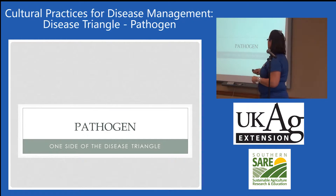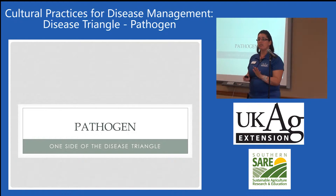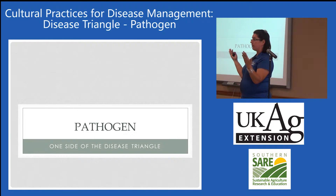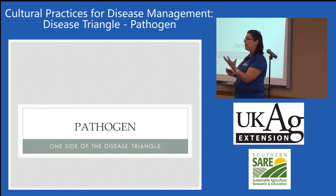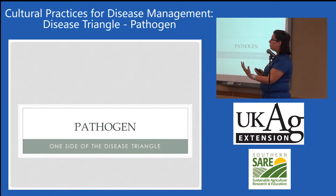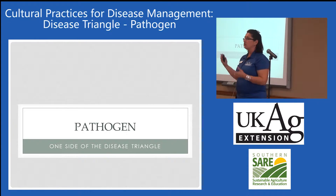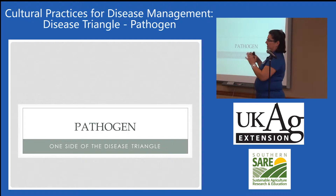Speaking of pathogens, the third side of the disease triangle — how do you manage the pathogen and manage disease? Disease and the pathogen and infection are two different things. Infection can occur, but disease, which is a symptom, can appear later. Sometimes infection will occur during bloom, but disease symptoms may not occur until ripening. So when we're talking about manipulating the pathogen, we're keeping that infection from occurring so that we don't see those symptoms later.